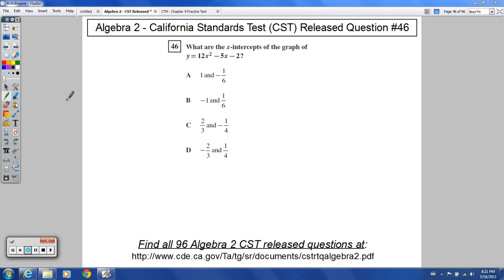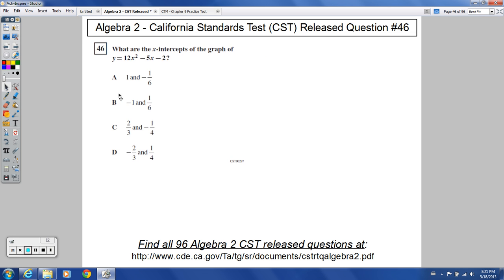Hello and welcome to Algebra 2 CST release question number 46. It says, what are the x-intercepts of the graph of y equals 12x squared minus 5x minus 2?